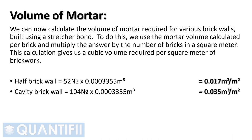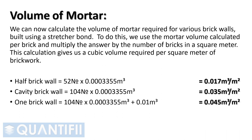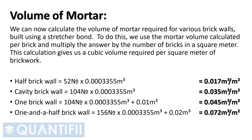A cavity brick wall of two skins equals 0.035 meters cube per meter square. A one brick wall, constructed of two skins, including the vertical 10 mm mortar fill, equals 0.045 meters cube per meter square. And lastly, a one and a half brick wall, made up of 156 bricks, multiplied by the mortar volume, including the two vertical 10 mm mortar fills between skins, equals 0.072 meters cube per meter square.